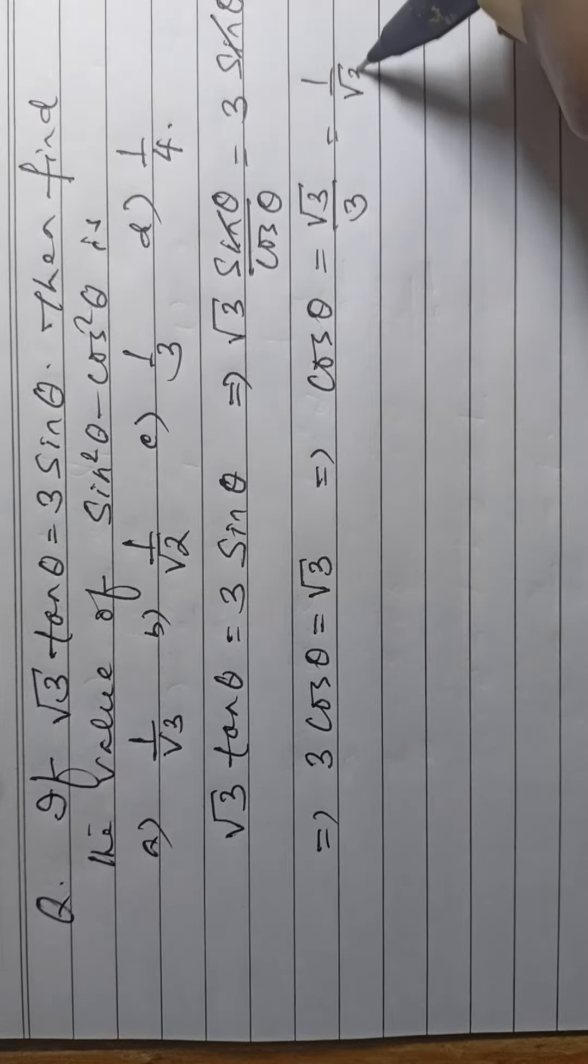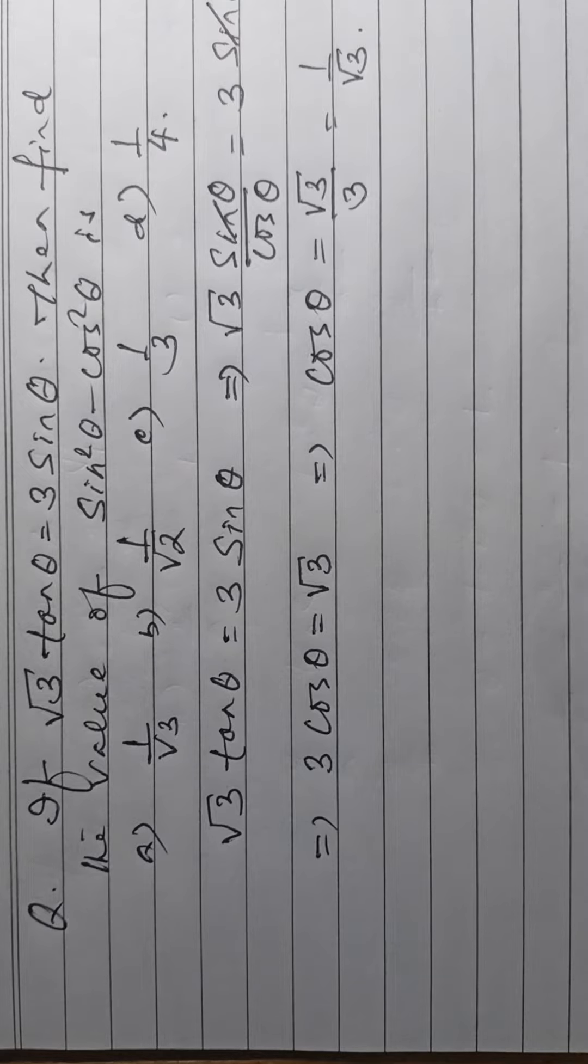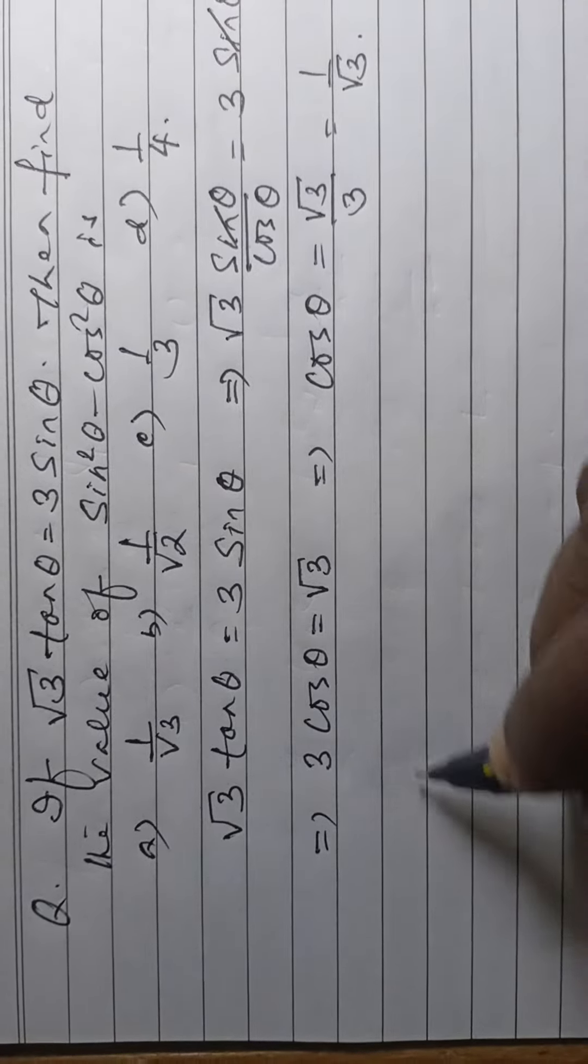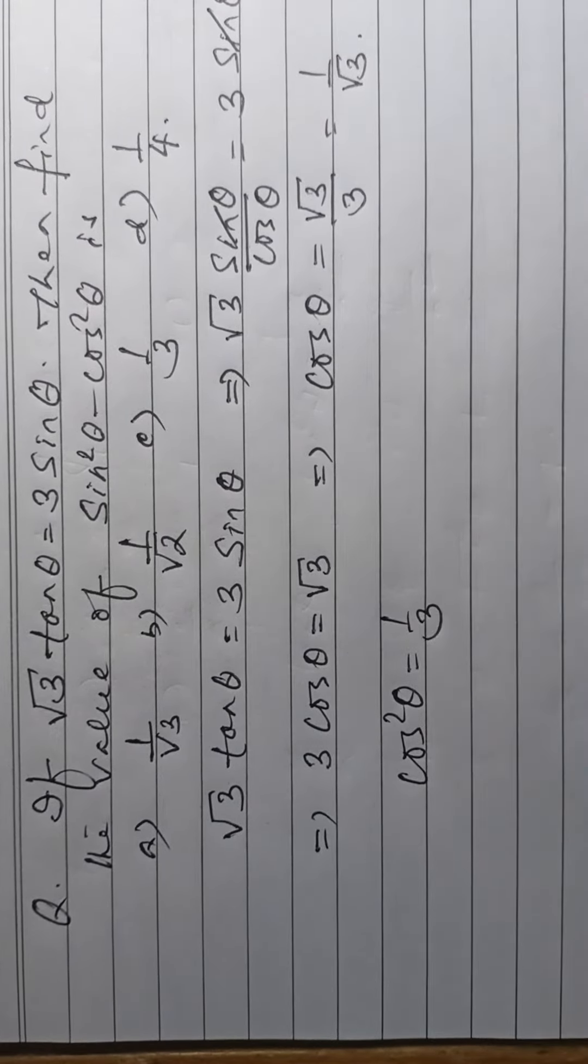So the cos value is here. Cos square theta is equal to 1 by 3.